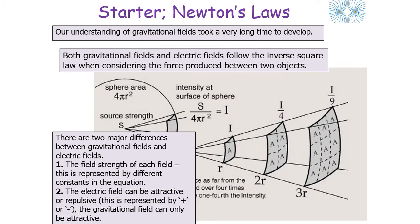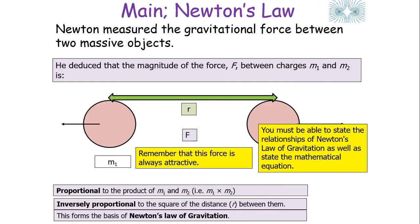There are two major differences between the gravitational field and the electrical field. First, they are represented by different constants, and electrical fields are a lot stronger than gravitational fields. Second, the electrical field can be attractive or repulsive, but the gravitational field can only ever be attractive.